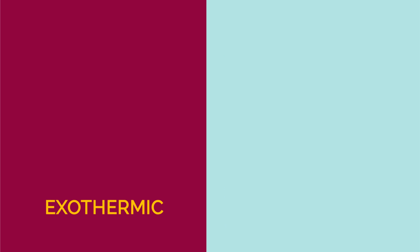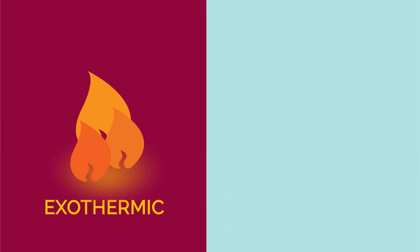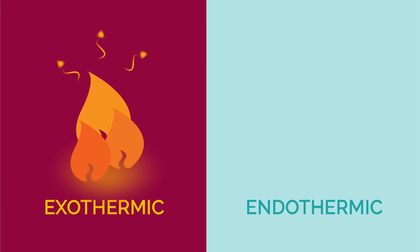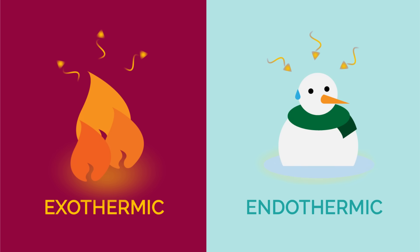An exothermic reaction gives off energy to the surroundings, like this fire gives off heat. Whereas an endothermic reaction takes in energy from its surroundings, like this poor melting snowman taking in the heat. Just remember: exo means external, so giving out, and endo means internal, so taking in.